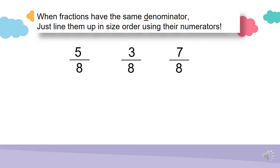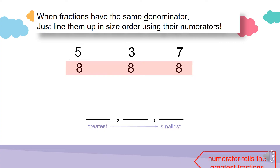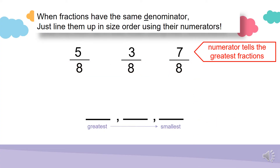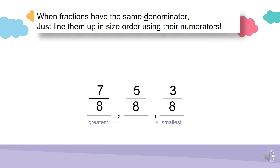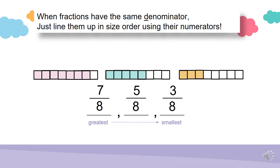We don't even need to use the fraction strips. We're going to put these fractions in order from greatest to smallest. This time I'm not going to use fraction strips. As you can see, the denominators are all the same, so the numerator tells us the greatest fraction. 7 over 8 is the greatest fraction because it has the greatest numerator. Next one down is 5 over 8, and the smallest one is 3 over 8. Let's check with fraction strips — as you can see, 7 over 8 has more shaded parts, hence it is the greatest fraction. Next is 5 over 8, and the smallest is 3 over 8.